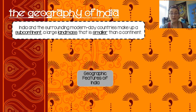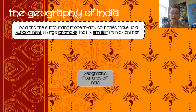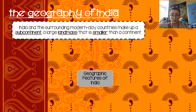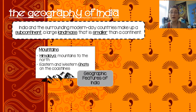Let's talk about some of the geographic features of India. The Indian subcontinent is huge and there are lots of different regions — just like in the United States, we have deserts, mountains, areas that are very cold and areas that are very hot. There are some things that affect the entire subcontinent. For example, the mountains — we have the Himalayan mountains to the north and the eastern and western ghats that run along the coastlines.